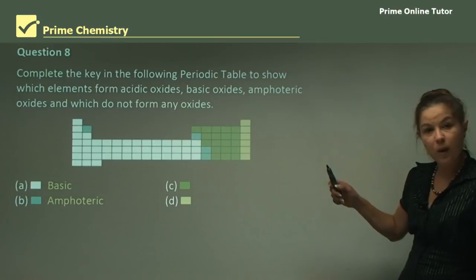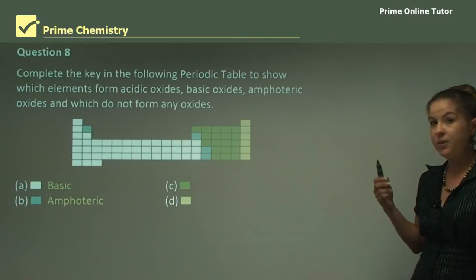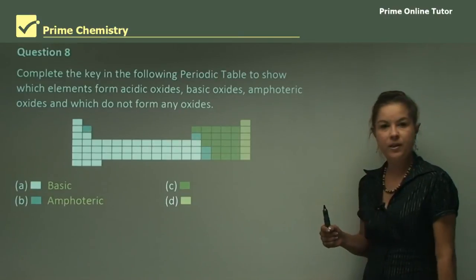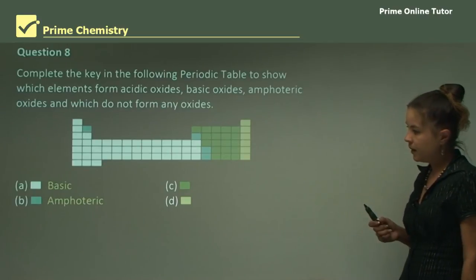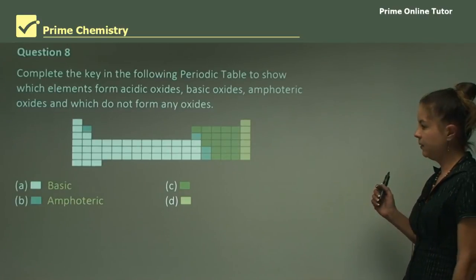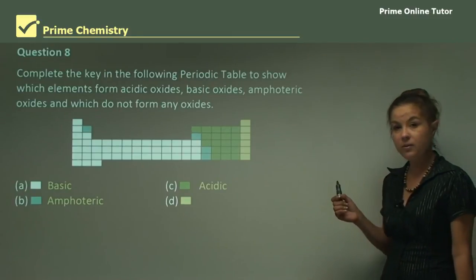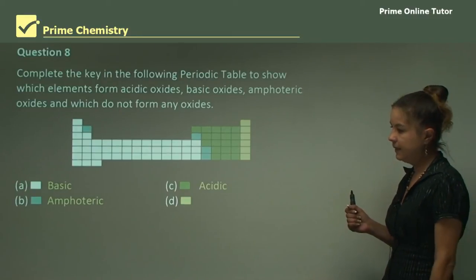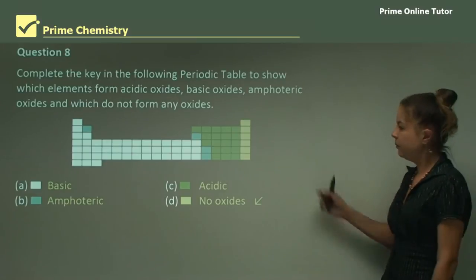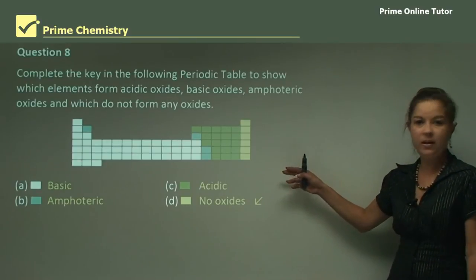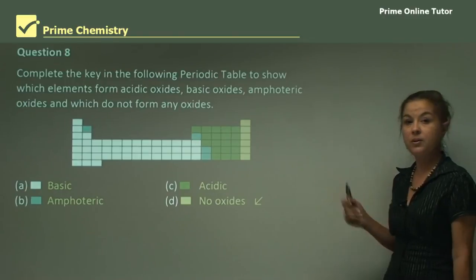Part B, the blue ones, are the exception to the rule, they are amphoteric such as lead and zinc. Part C, the green ones, form acidic oxides because they're non-metals. And finally D, no oxides at all because these are noble gases, they're unreactive, so they will not bond with oxygen.